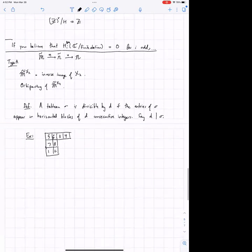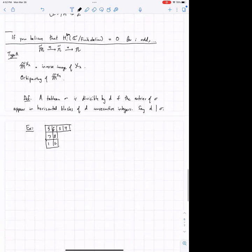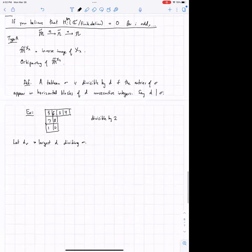So this tableau is divisible by two, but if I interchange the two and the three, it won't be divisible by two anymore because I've gotten rid of the consecutive integer condition. So I hope it's clear what I mean by divisible. This is divisible by two. And so then we could call what, what D sigma would be the largest be the largest D dividing sigma. Because obviously if a tableau is divisible by four, it's divisible by two as well.